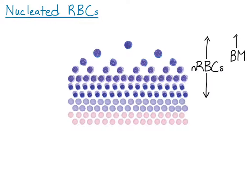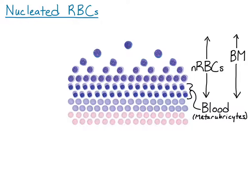These cells are of course found in the bone marrow, but very low numbers of the last stage, the metarubocyte, are released into blood. You might see zero to one nucleated red blood cells per 100 white blood cells, and they should be metarubrocytes. You don't need to know all stages of red cell precursors, but I do want you to know the term metarubrocyte.